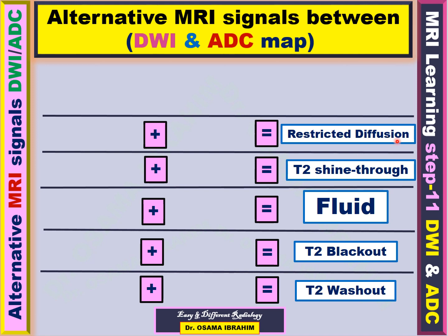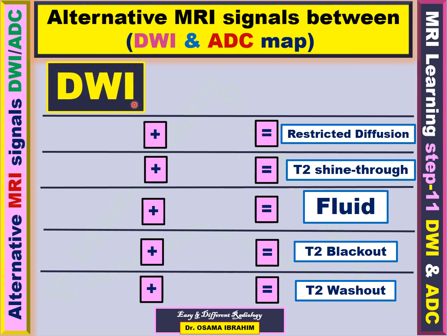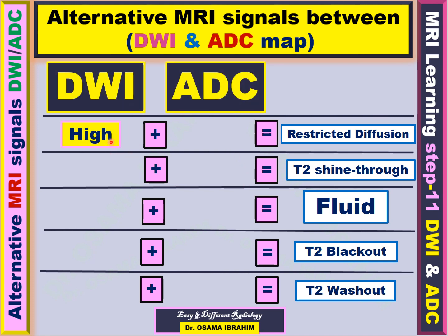Restricted diffusion, T2 shine through, fluid, T2 blackout, T2 washout — these are the clinical expressions for alternative signals between diffusion-weighted image and ADC. If diffusion-weighted image is high and ADC is low, it is considered restricted diffusion. However, if both diffusion-weighted image and ADC are high, this is called T2 shine through.